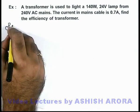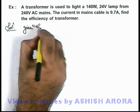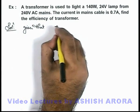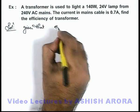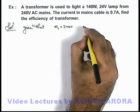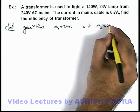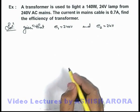Now in this situation, here we can directly write given that the EMF at primary coil Ep or E1 we can write as 240 volt at AC mains, and EMF at secondary coil E2 here it can be written as 24 volt. This is already given to us.